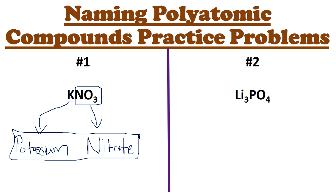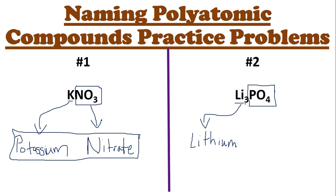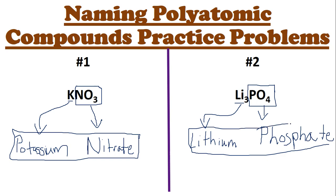Pause and try the second one. I see three different symbols, so it's polyatomic. Comparing the symbols, Li3P is not a polyatomic ion, but PO4 is, so I box it. Then we name the first element — it's lithium. We don't have to worry about the subscript 3 because it's not binary. Then we name the polyatomic ion: PO4 is phosphate. The answer is lithium phosphate.